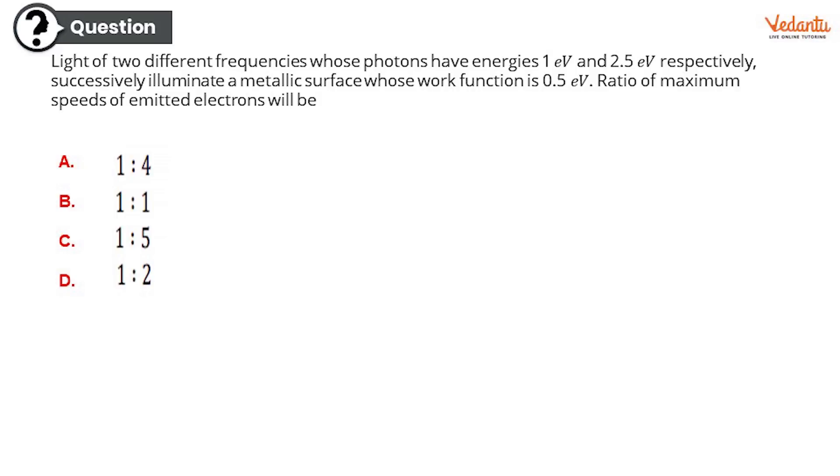Light of two different frequencies whose photons have energies 1 eV and 2.5 eV respectively successively illuminate a metallic surface whose work function is 0.5 eV. Ratio of maximum speeds of emitted electrons will be—so it's a ratio, what do you guys think? Option A: 1:4. Or option B: 1:1. Option C: 1:5. Or option D: 1:2.